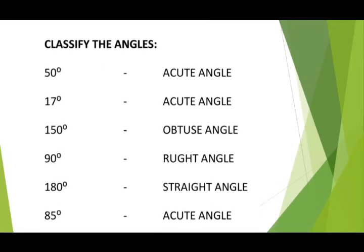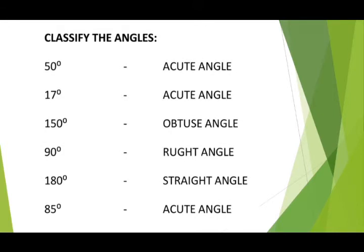Let's classify some angles: 50 degrees is an acute angle. 70 degrees is less than 90 degrees, so it is also an acute angle. 150 degrees is more than 90 degrees, so it is called an obtuse angle. 90 degrees is a right angle. 180 degrees is a straight angle. 85 degrees is less than 90 degrees, so it is an acute angle.